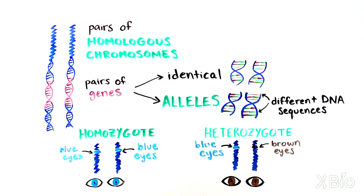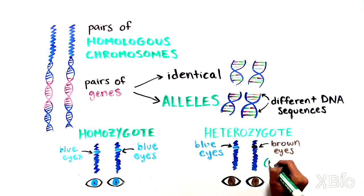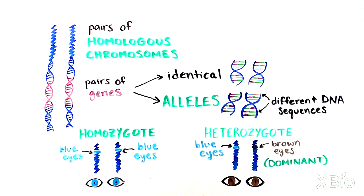For example, the allele for brown eyes is dominant over blue, so the person will have brown eyes. The blue allele is recessive, because it has no effect on the phenotype of the heterozygote.